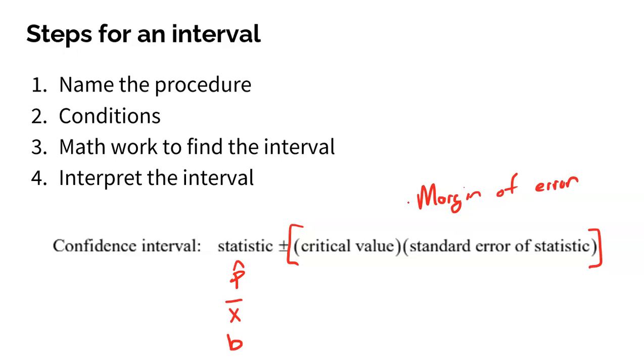The margin of error is a combination of two things. A critical value, that's a Z star or a T star. It's basically how much we're willing to reach. That is dependent on your confidence level, 95%, 98%.